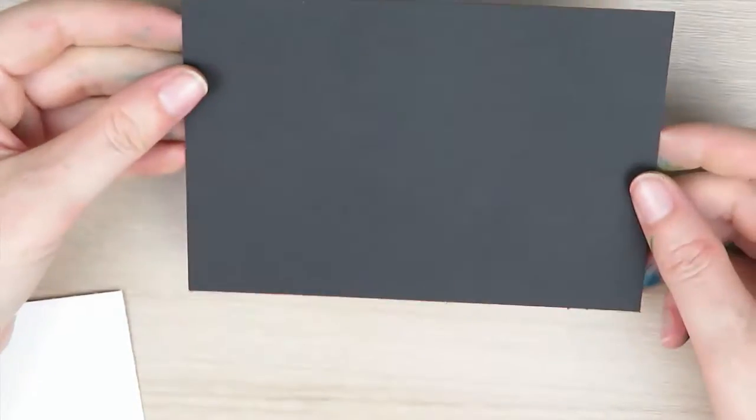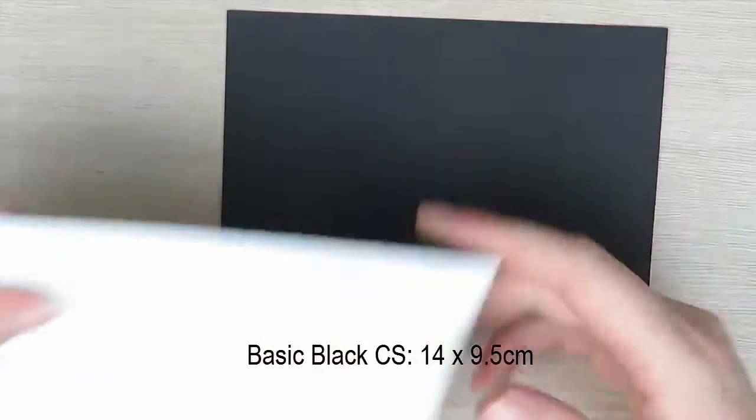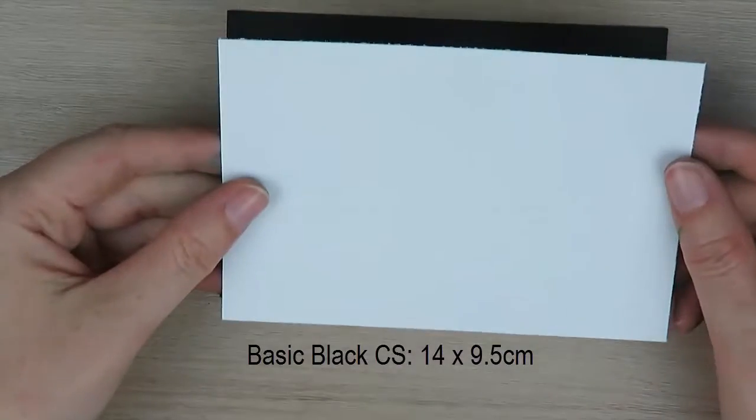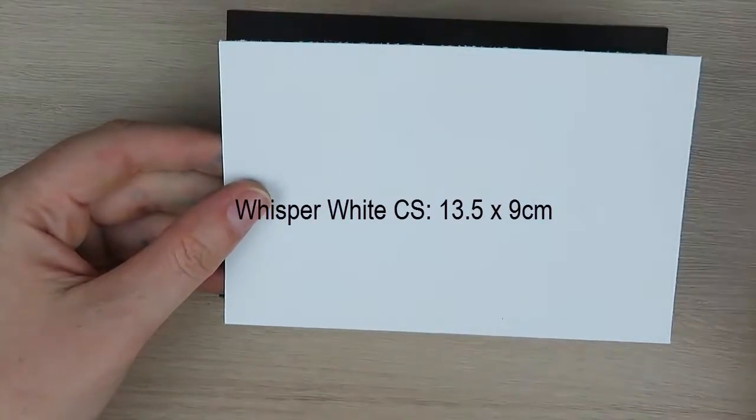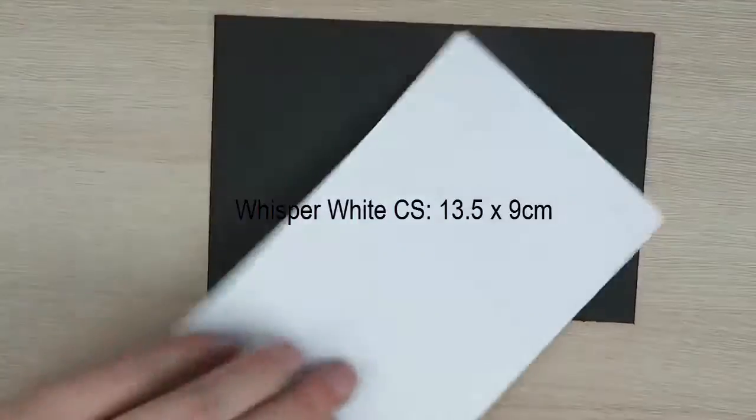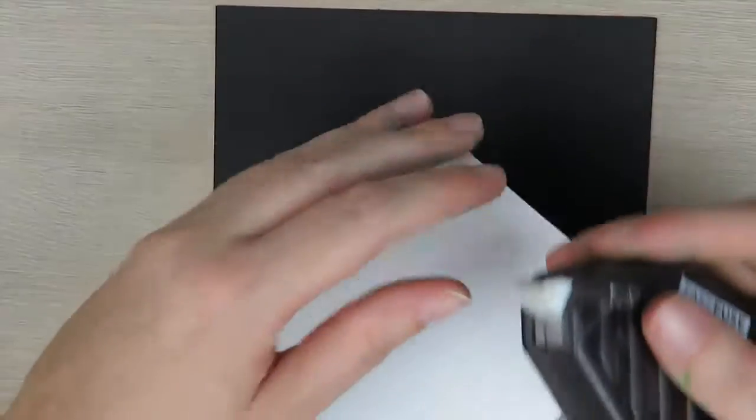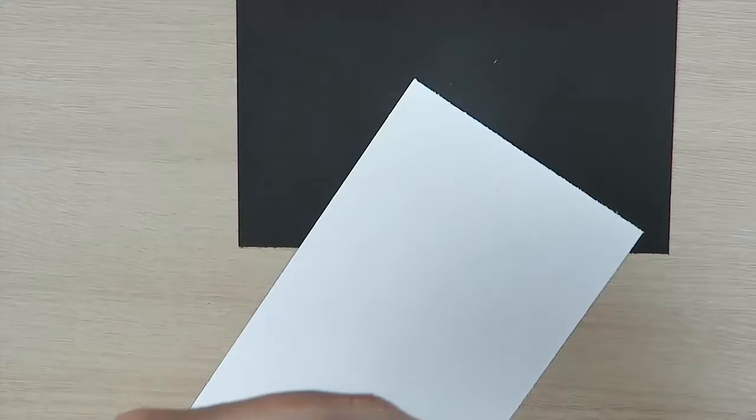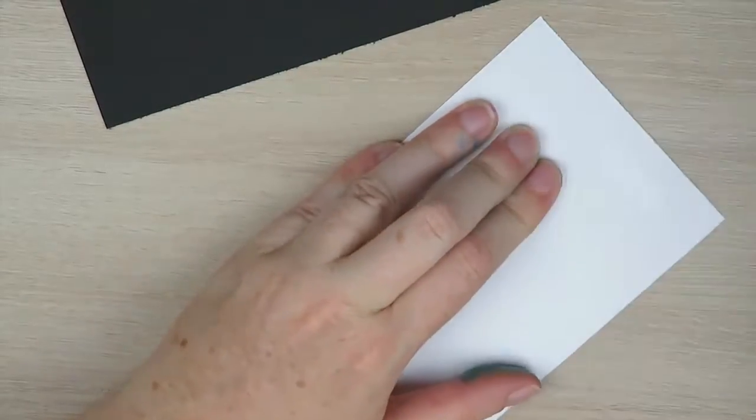So next I have a piece of basic black cardstock and this piece here measures 14 by 9.5 centimeters, and a piece of whisper white cardstock that measures 13.5 by 9 centimeters. So what I'm going to do is I'm going to stick my whisper white to my basic black.